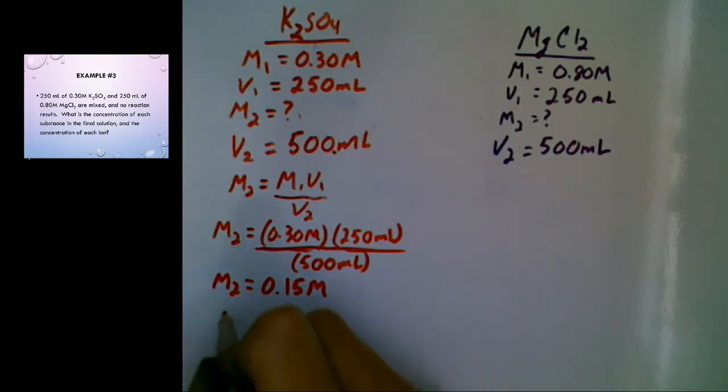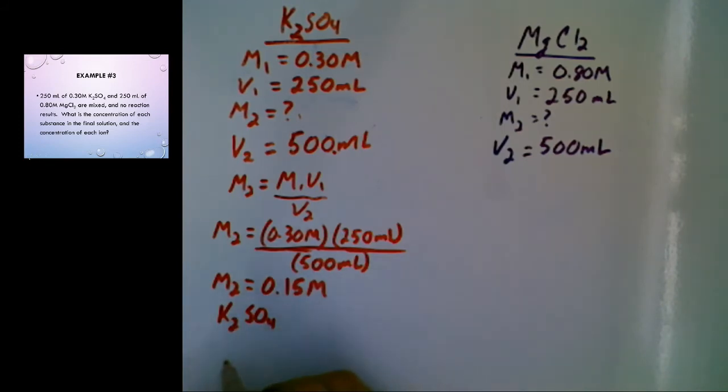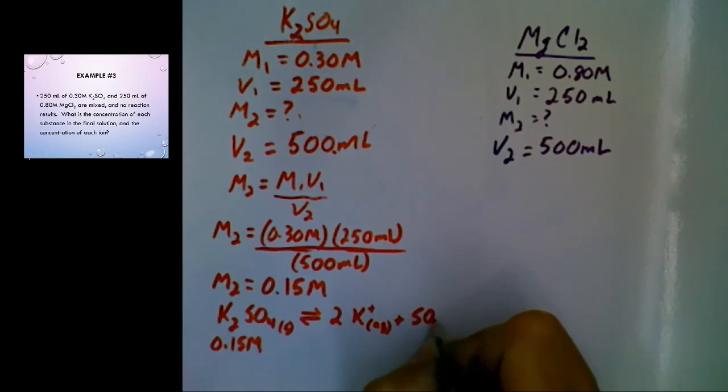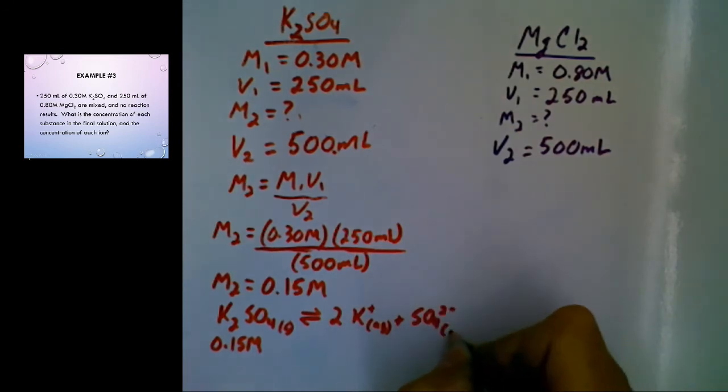And my concentration after mixing ends up being 0.15 molarity. So what that actually means is for the K2SO4, the concentration of it is 0.15 molarity. But keep in mind, this would have been dissolved, and so we have to apply our coefficients to find out the concentrations of each ion.